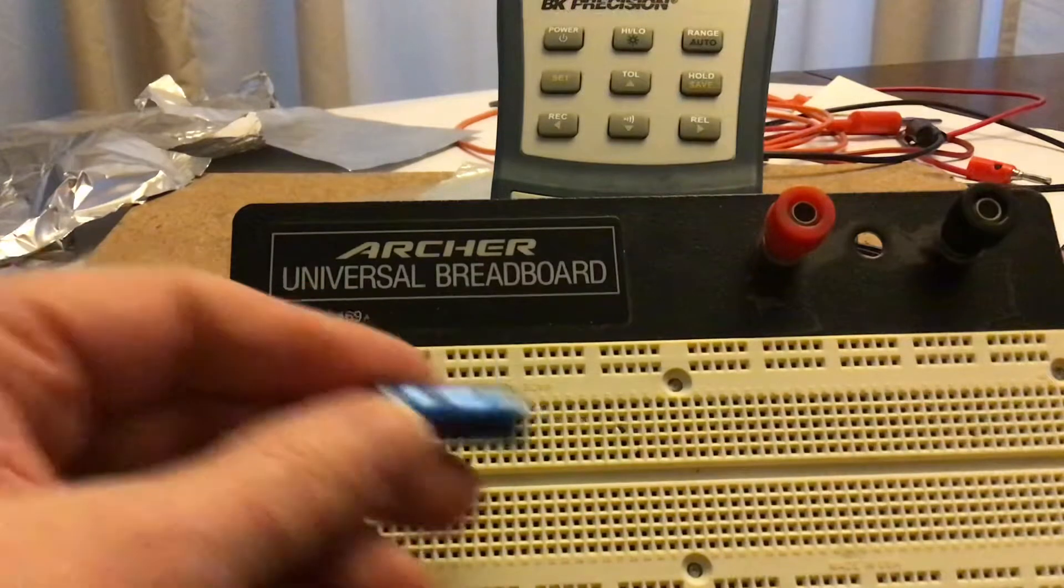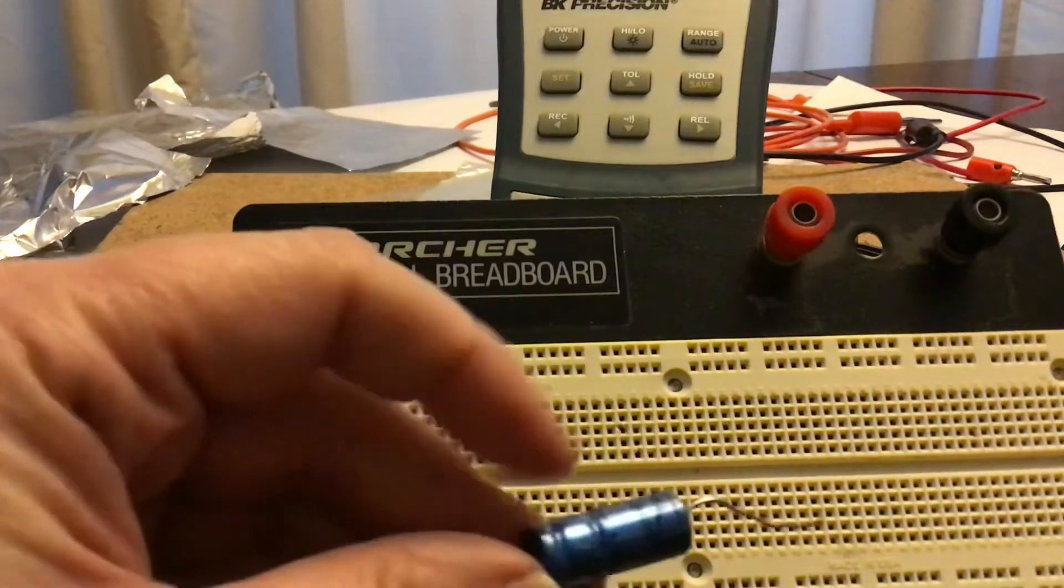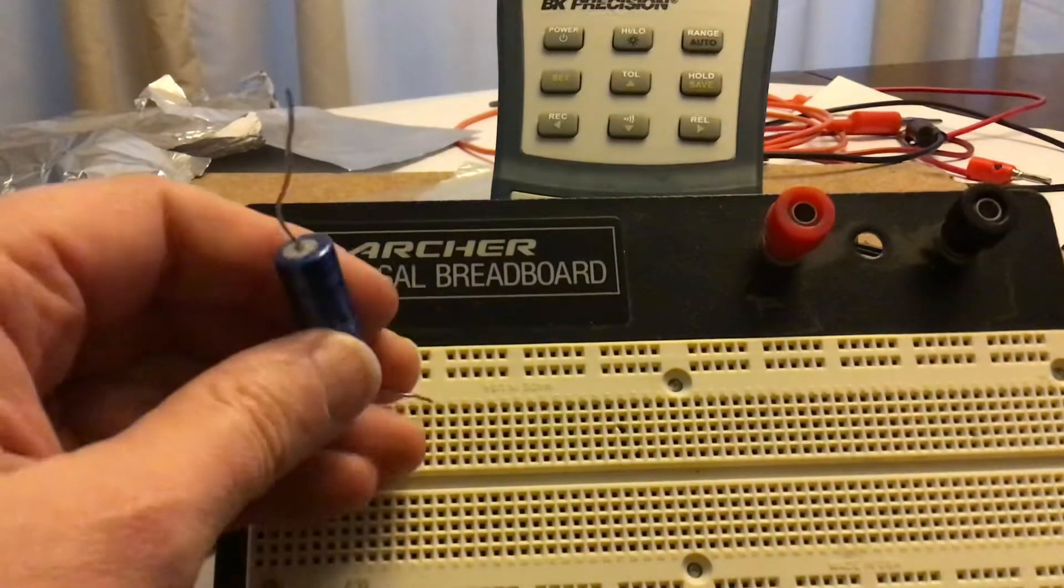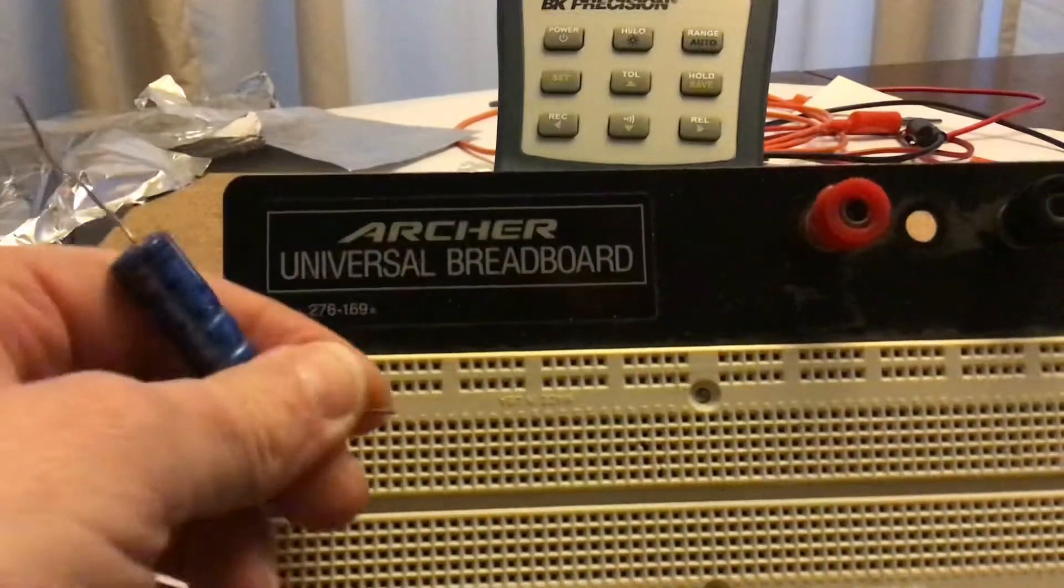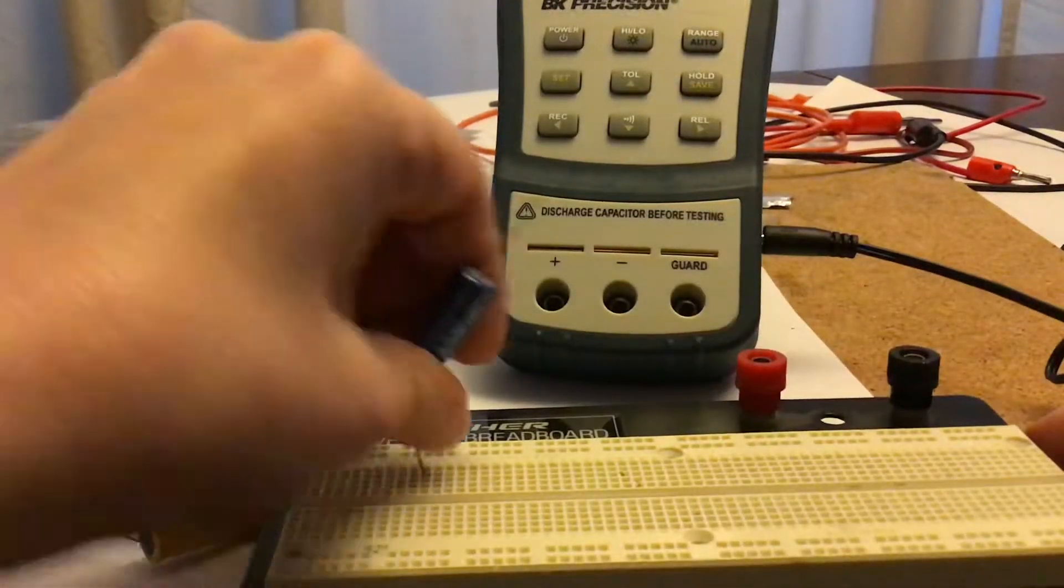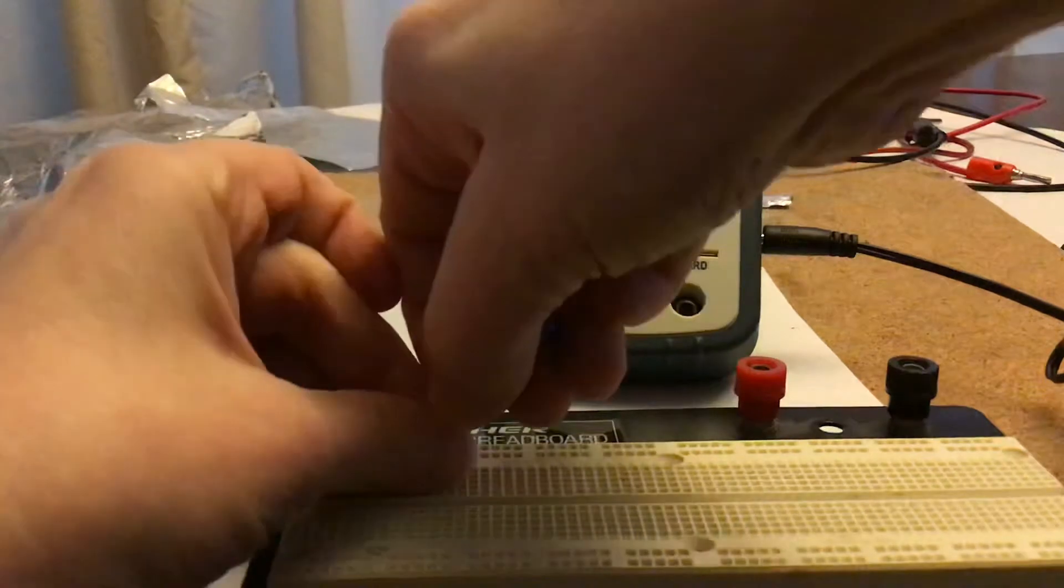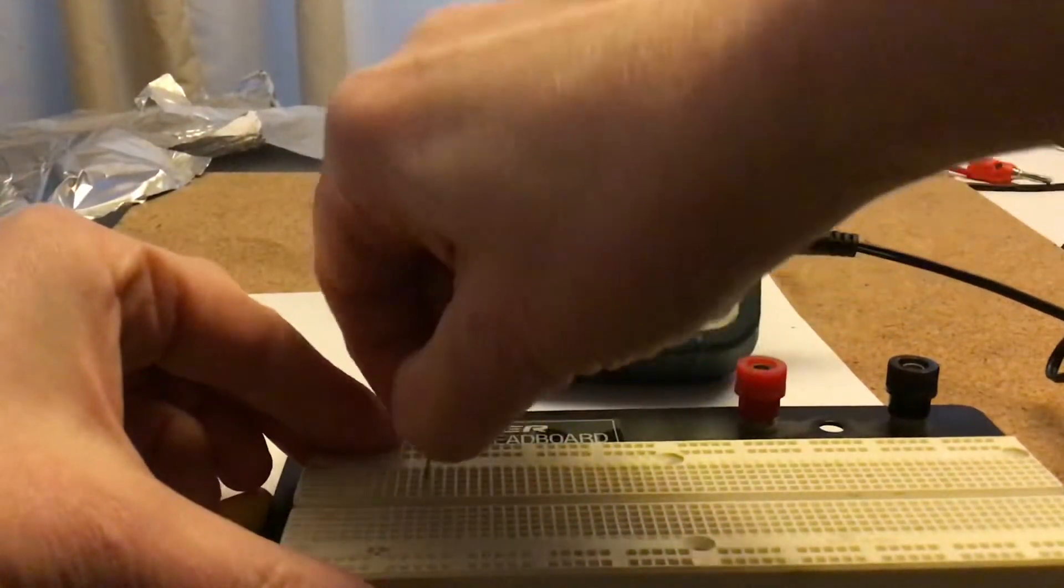So, I'm going to make them go in one direction. I'm going to put all the indentations on the left. That will be positive. I'm going to stick these ends into the breadboard. There's one.